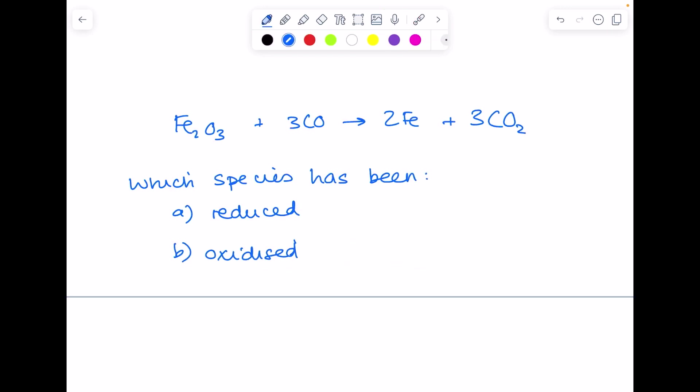Now we're looking at a second example. This time we're being asked which species has been reduced, which species has been oxidized. Hopefully it's clear because we have oxygen included that our definitions this time will be the ones relating to oxygen being lost or gained. So which species has lost oxygen? Hopefully you can see that it's the iron oxide because when it appears on the right-hand side, it has lost that oxygen. Just write the formula.